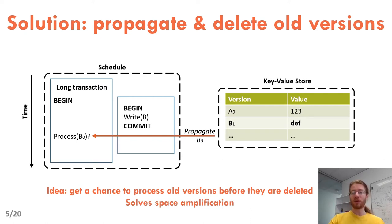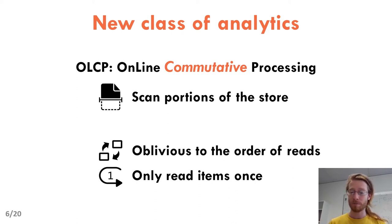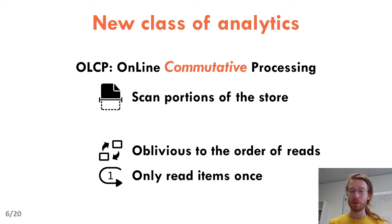When a transaction receives a propagated item, it gets a chance to process it, but then the propagated item is deleted and cannot be read again. Intuitively, this propagation mechanism fits many analytics queries that are oblivious to the order in which they read data and that read data only once. That being said, the interface of the store still needs to be modified to handle the propagation mechanism. So we define a new type of processing that we call OLCP, for Online Commutative Processing.